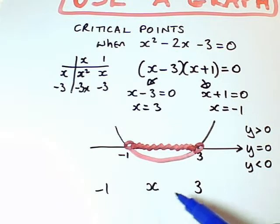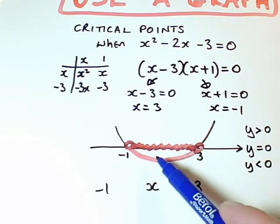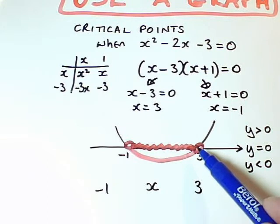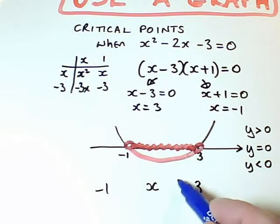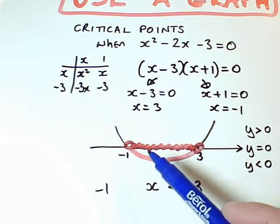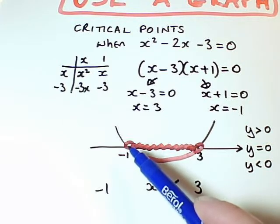So I put x between the minus 1 and the 3. And then I've just got to arrange my inequality signs correctly. Well, x has got to be small compared with 3, because there's 3 and I need to be that side of it. So x is less than 3.